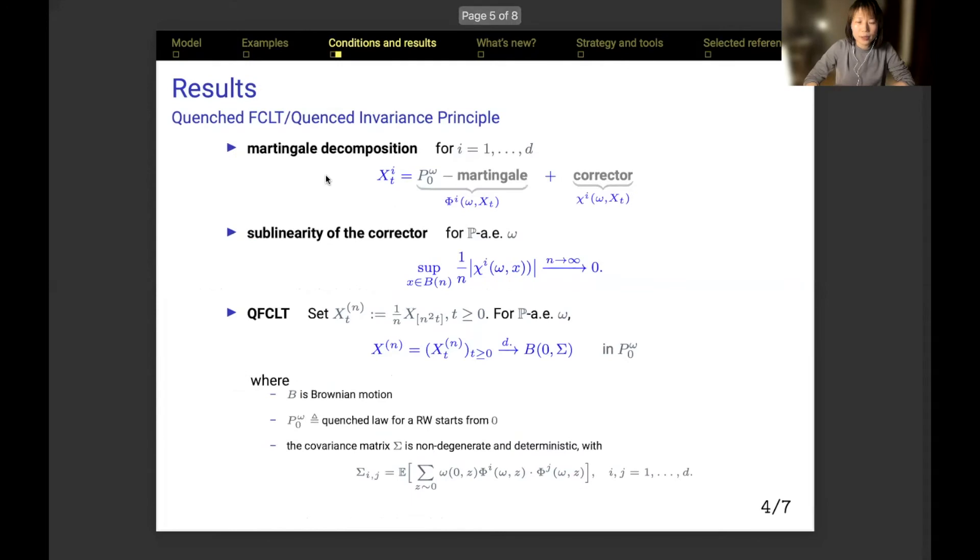With the three conditions we assumed, we proved the quenched functional central limit theorem or quenched invariance principle. Denote X_t the position of the particle in the random walk that starts from the origin in environment omega. By adding superscript i, we refer to its i-th coordinate. Our results include, first, the coordinate process can be decomposed into two parts: the martingale part, which is harmonic with respect to the quenched generator, and the remaining part we call the corrector, which is without any harmonic component.